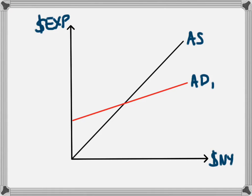This video is going to explain how you can use an aggregate supply and aggregate demand model to show the relationship between the marginal propensity to consume and the multiplier effect. If you're not sure about how the marginal propensity to consume will affect the level of aggregate demand, you should watch the video on the marginal propensity to consume.